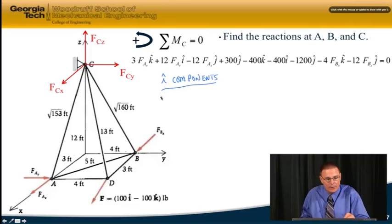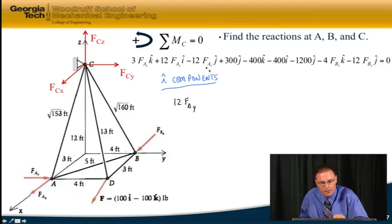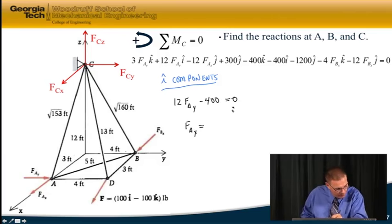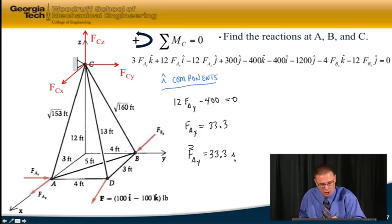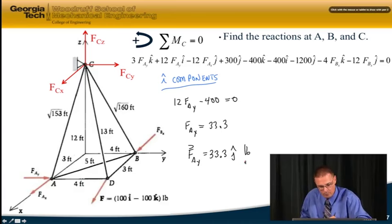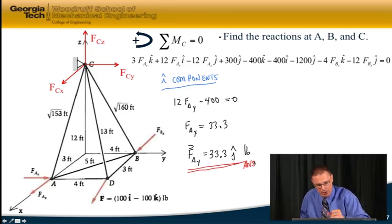And I get, on the left-hand side, I have 12 F_AY, and then I have minus 400, and equals zero. So what that tells me is F_AY ends up equaling 33.3, or F_AY as a vector is 33.3 in the J direction, pounds. So that's one of my reactions that I wanted to solve for.